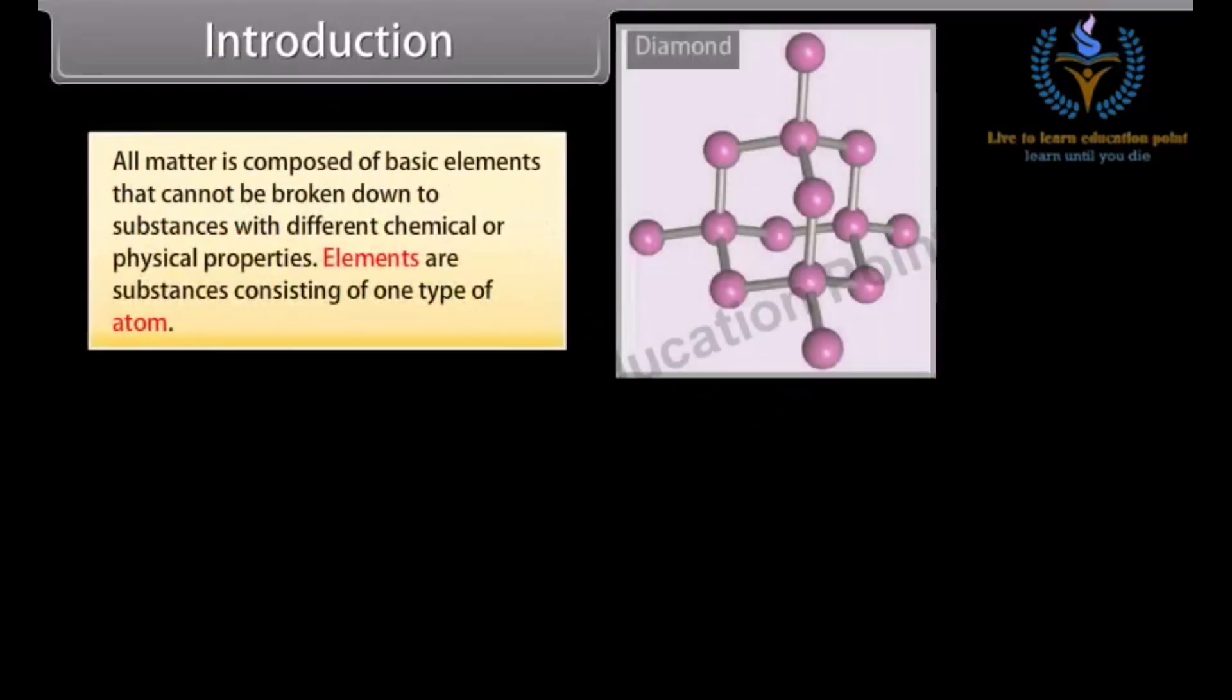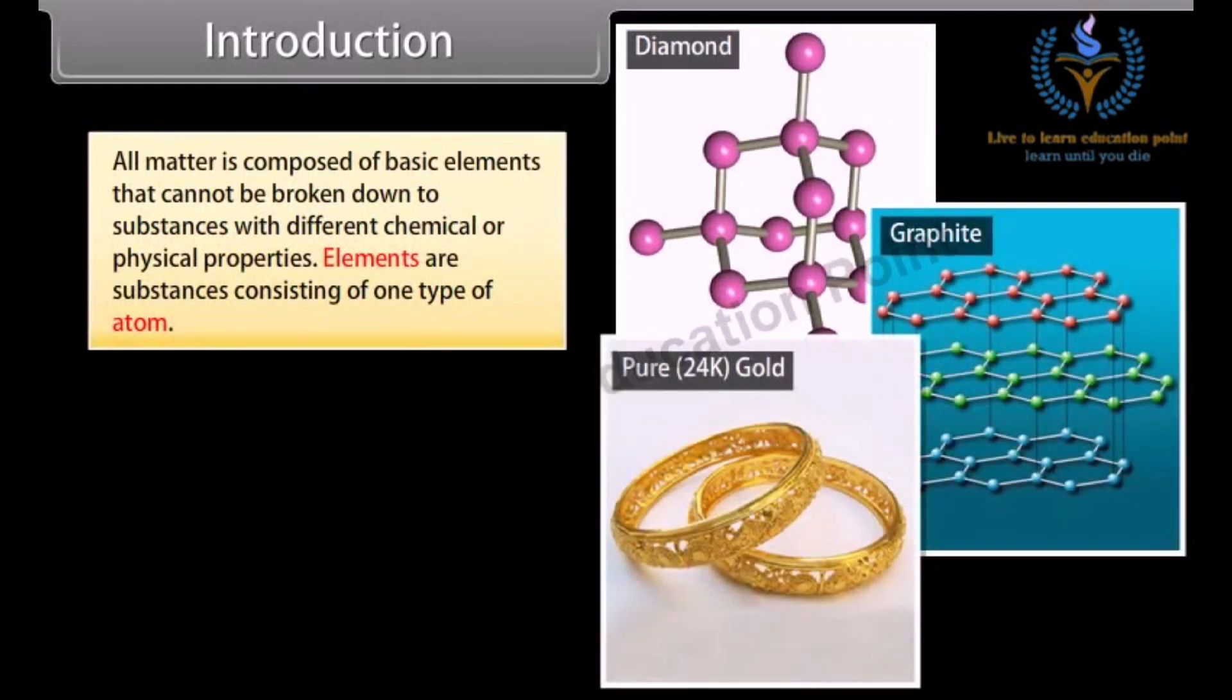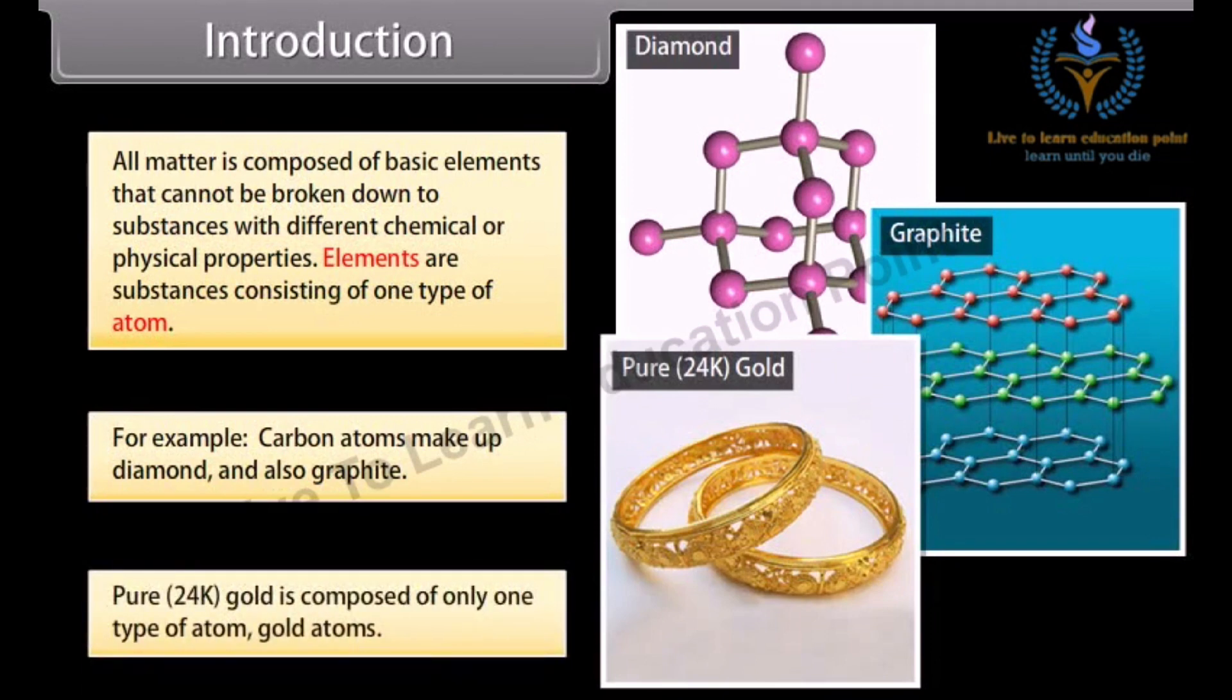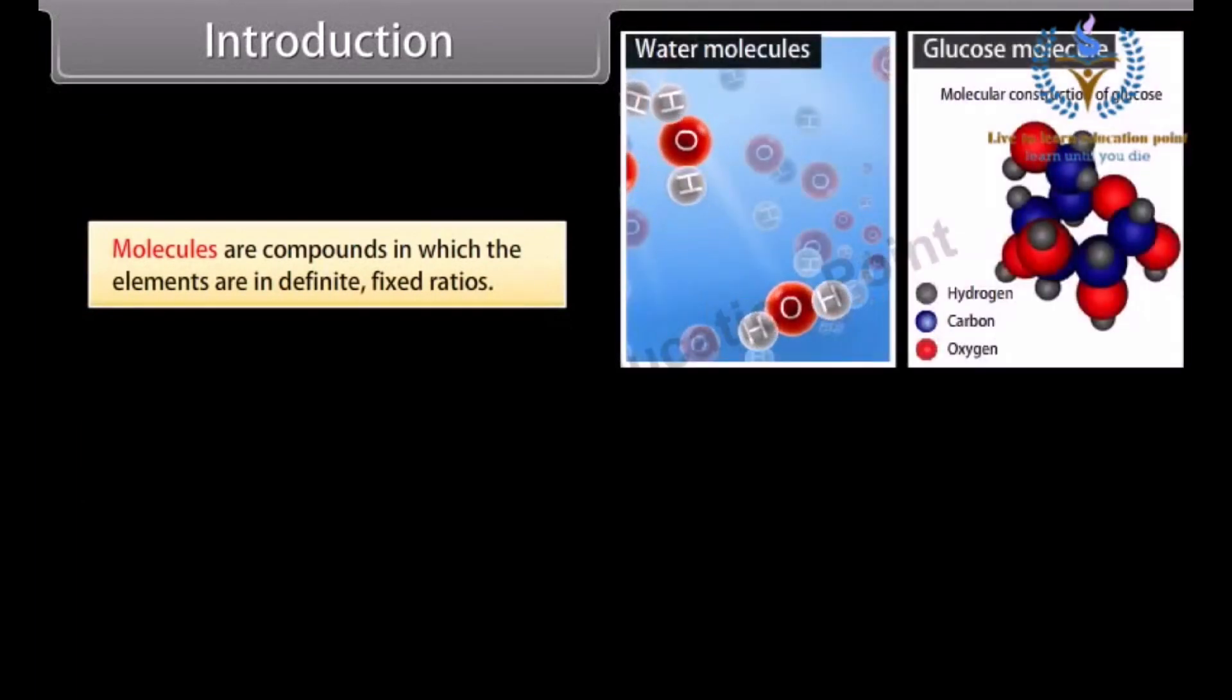Introduction. All matter is composed of basic elements that cannot be broken down to substances with different chemical or physical properties. Elements are substances consisting of one type of atom. For example, carbon atoms make up diamond and also graphite. Pure 24 karat gold is composed of only one type of atom, gold atoms.